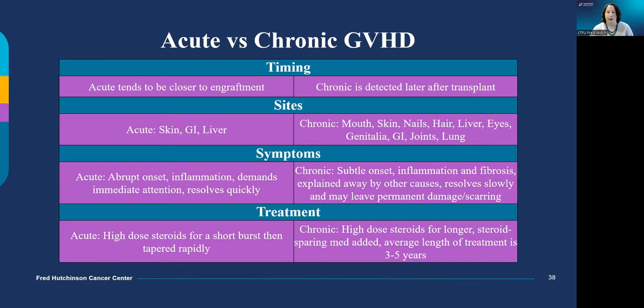A steroid-sparing medication is often used to help taper steroids off quicker, but then you remain on that steroid-sparing medication longer. Recovery can take months, two years, or chronic GVHD can become stubborn to treat or affect other body systems. There is often permanent damage to the body system after chronic graft-versus-host disease activity resolves, such as permanent eye and mouth dryness, skin changes, or lung damage.